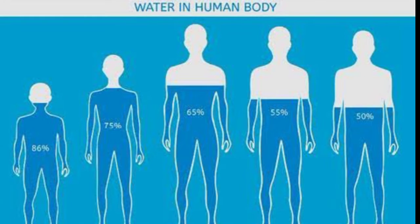The third question is: what is the percentage of water in the human body? Ek insaan de shareer vich kinne pratishat tak paani hai? And the answer is 50 to 65 percent.